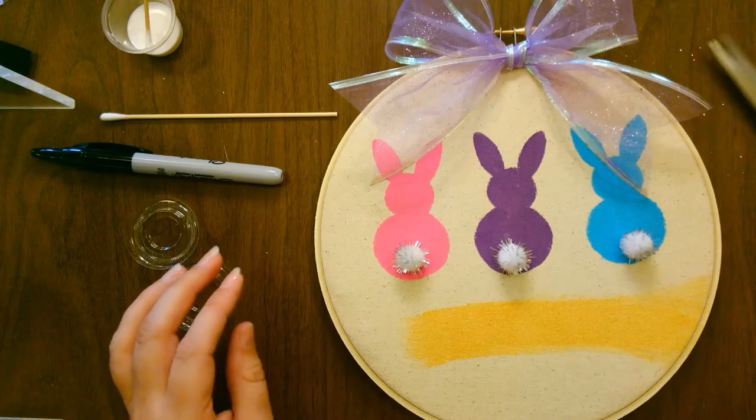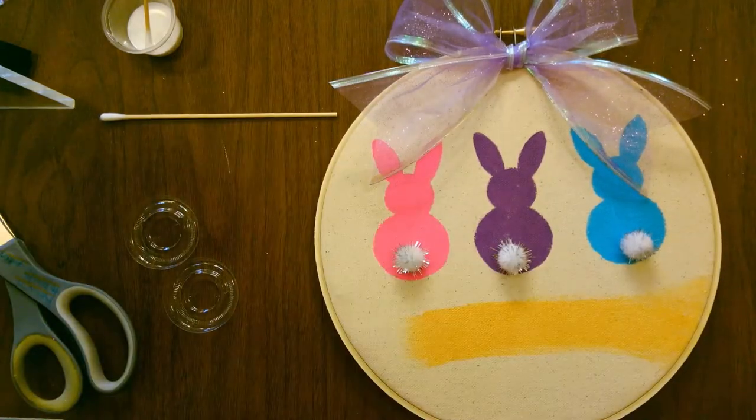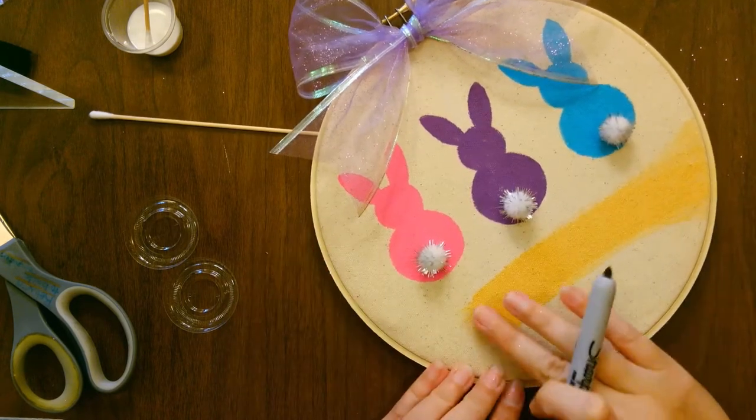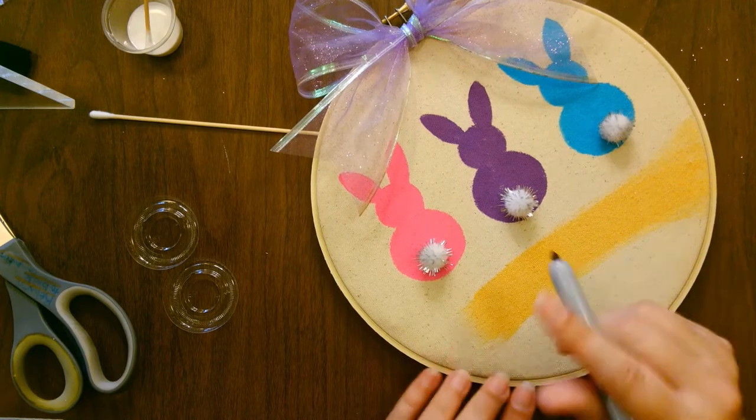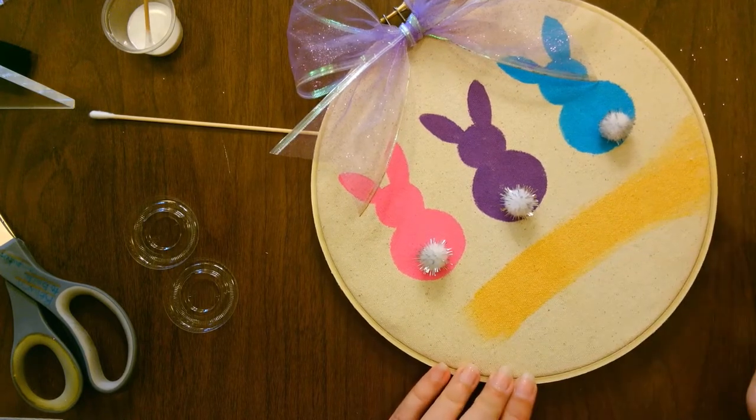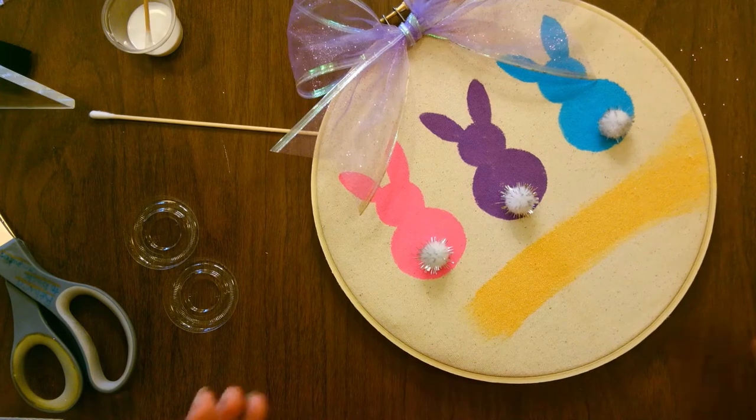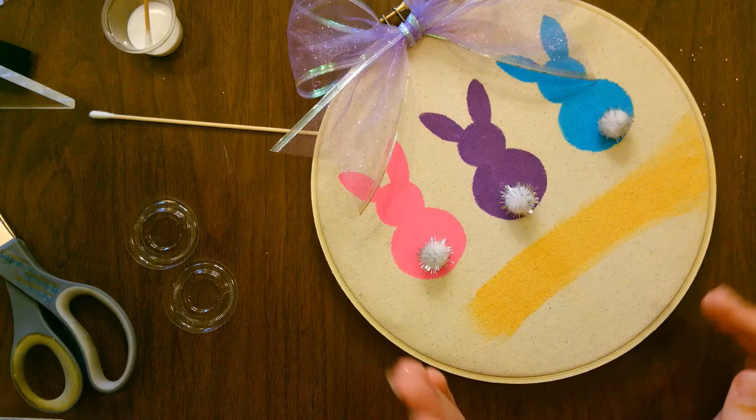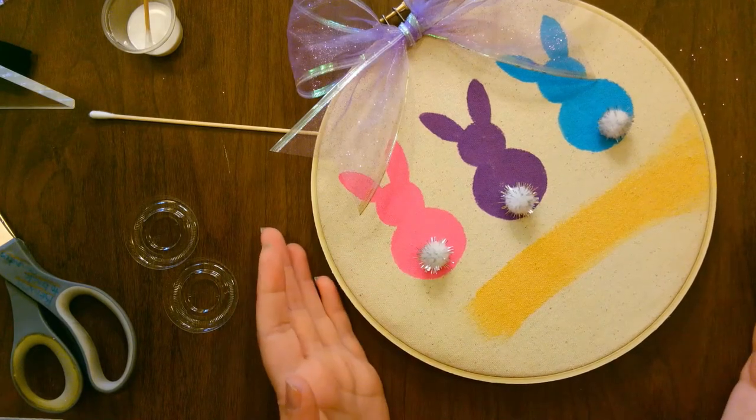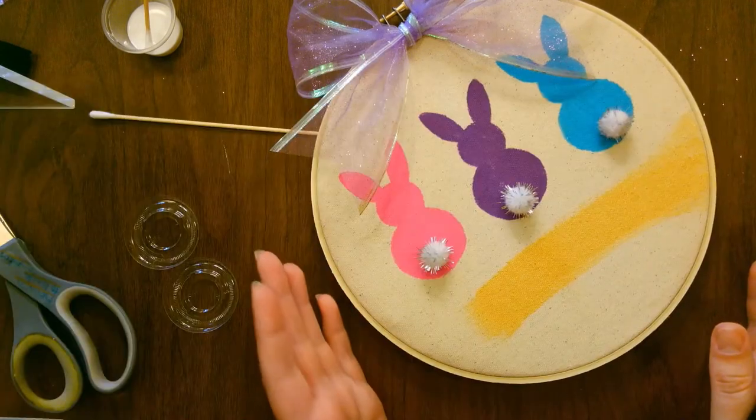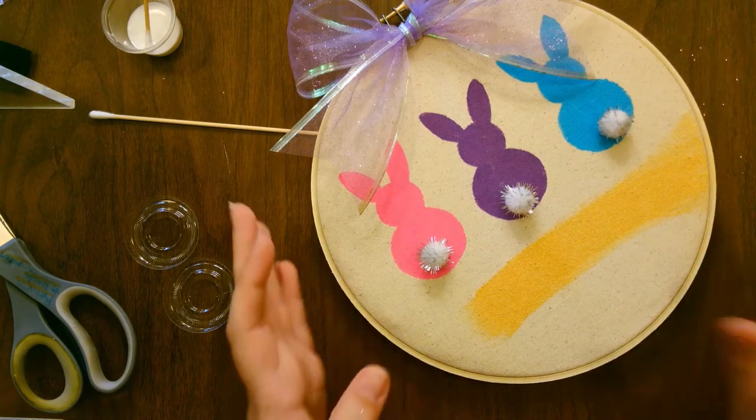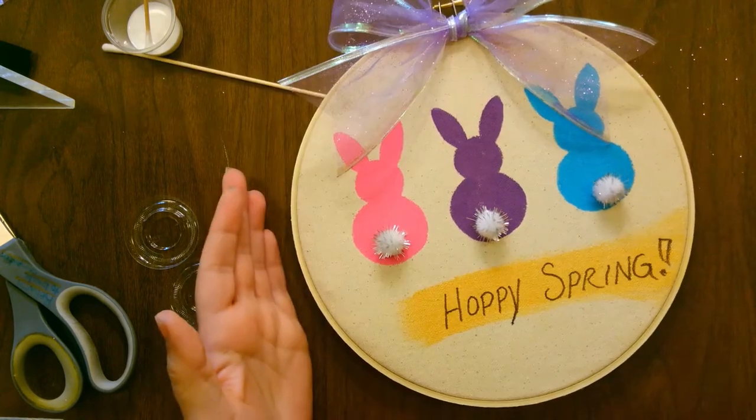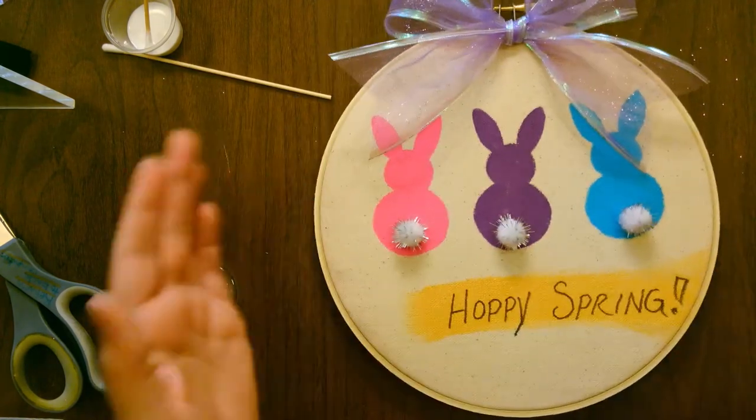Okay, we're almost done. Last step is your marker. In the gold down here, you can write your family name, or Happy Easter, or Happy Spring, or any little phrase that you want. You're just going to want to make sure that it's going to fit in here. So keep it to no more than three words, I would say. I like to write Happy Spring. There you go, we're all finished and ready to hang.